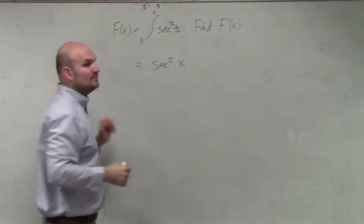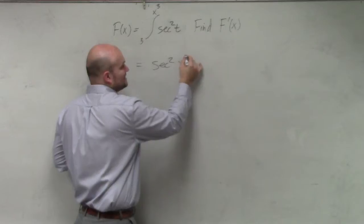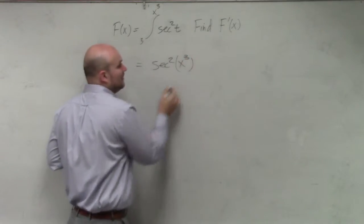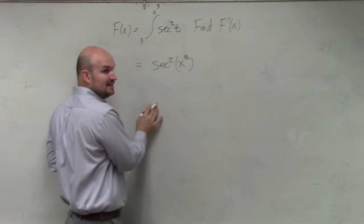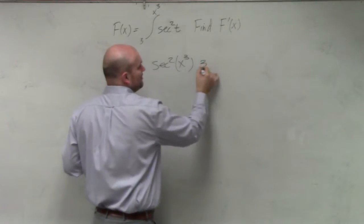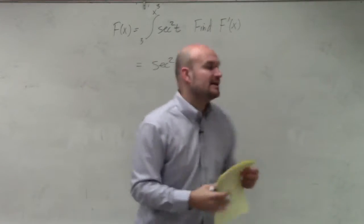when I have to differentiate this, I have x cubed. So yes, I have secant squared of x cubed, and then I need to multiply that by the derivative, which is going to be multiplied by 3x—3x squared. Huh? 3x squared, thank you.